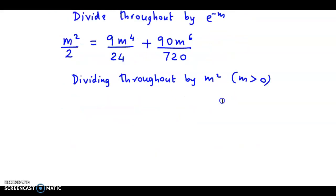Dividing throughout, we get 1/2. If we divide by 3, 3 into 9 is 3, 3 into 24 is 8. Canceling m^2 leaves m^2 on this side,